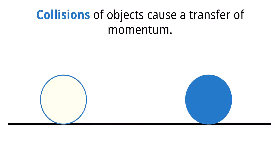Objects interact by crashing into one another. These interactions are called collisions. When objects collide, they transfer momentum. Any interaction where momentum is transferred or shared between moving objects is a collision.